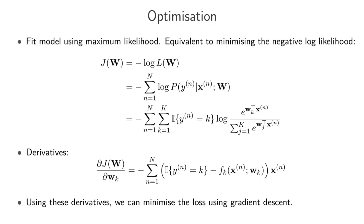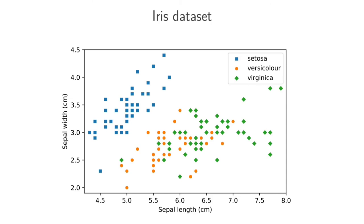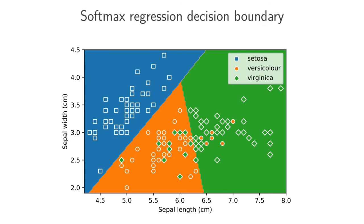Let's see what happens when we actually do that. Running multi-class softmax regression on the iris dataset, this is the output of the model. We have our setosas, our versicolors, and our virginicas. You can compare the decision boundary for softmax regression with that of one-versus-rest logistic regression.